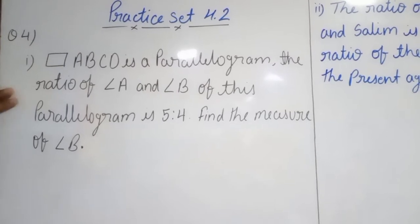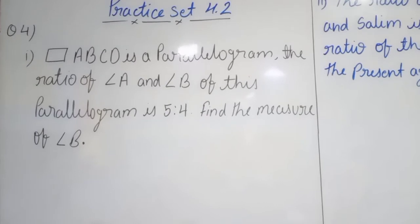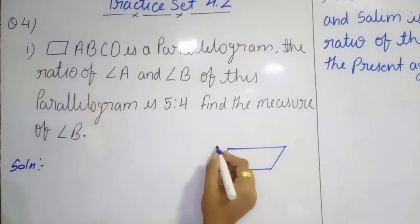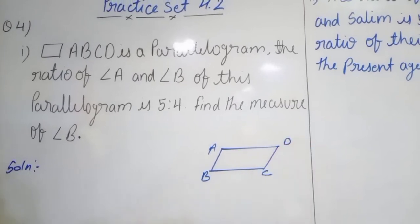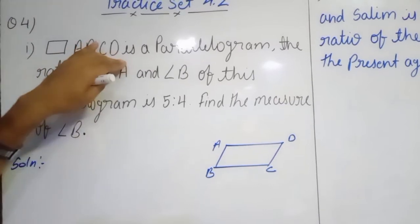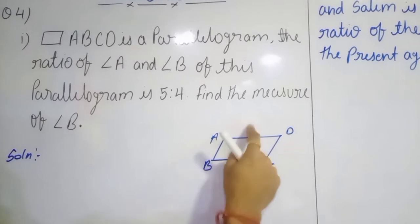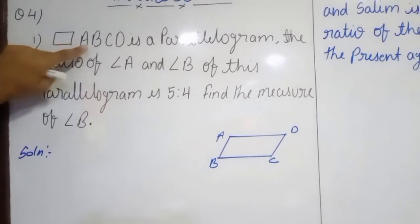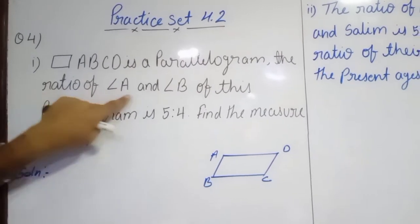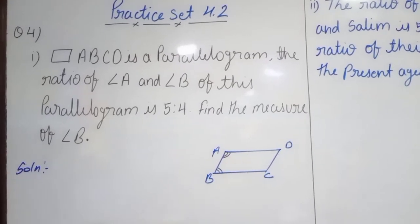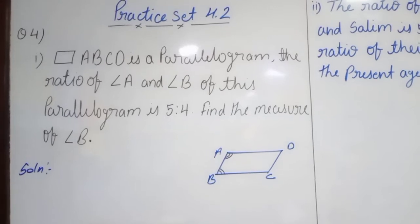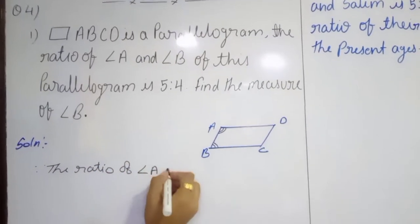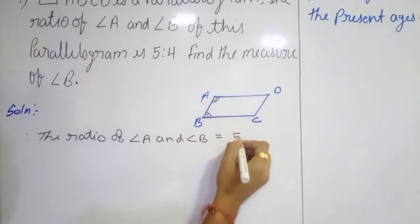As I said, first we have to read the question. There is a quadrilateral, and the type of quadrilateral is a parallelogram ABCD. Whenever we are talking about a parallelogram, the thing that comes to mind is that the opposite sides of the parallelogram are parallel. Keep that in mind. Now the ratio of angle A and angle B of this parallelogram is given, so always write down the given things first: the ratio of angle A and angle B is equal to 5 is to 4.